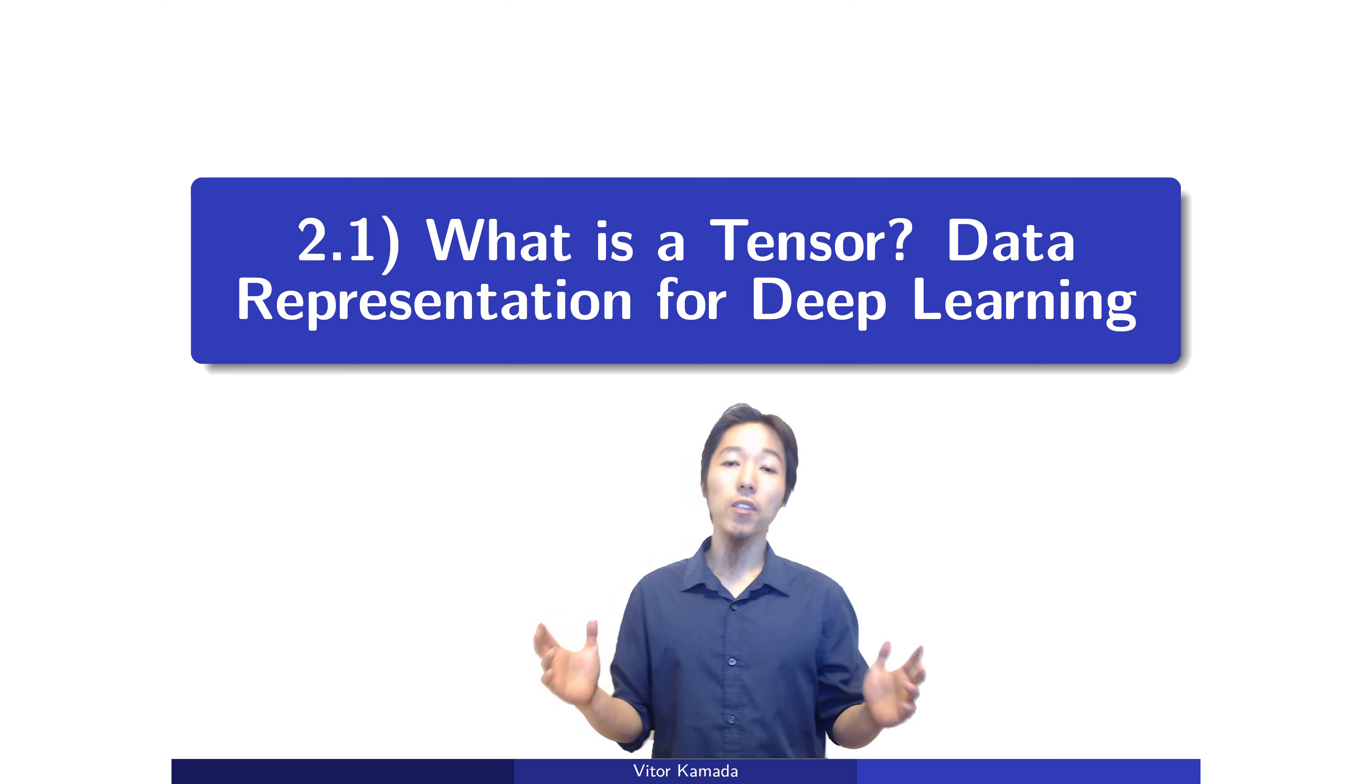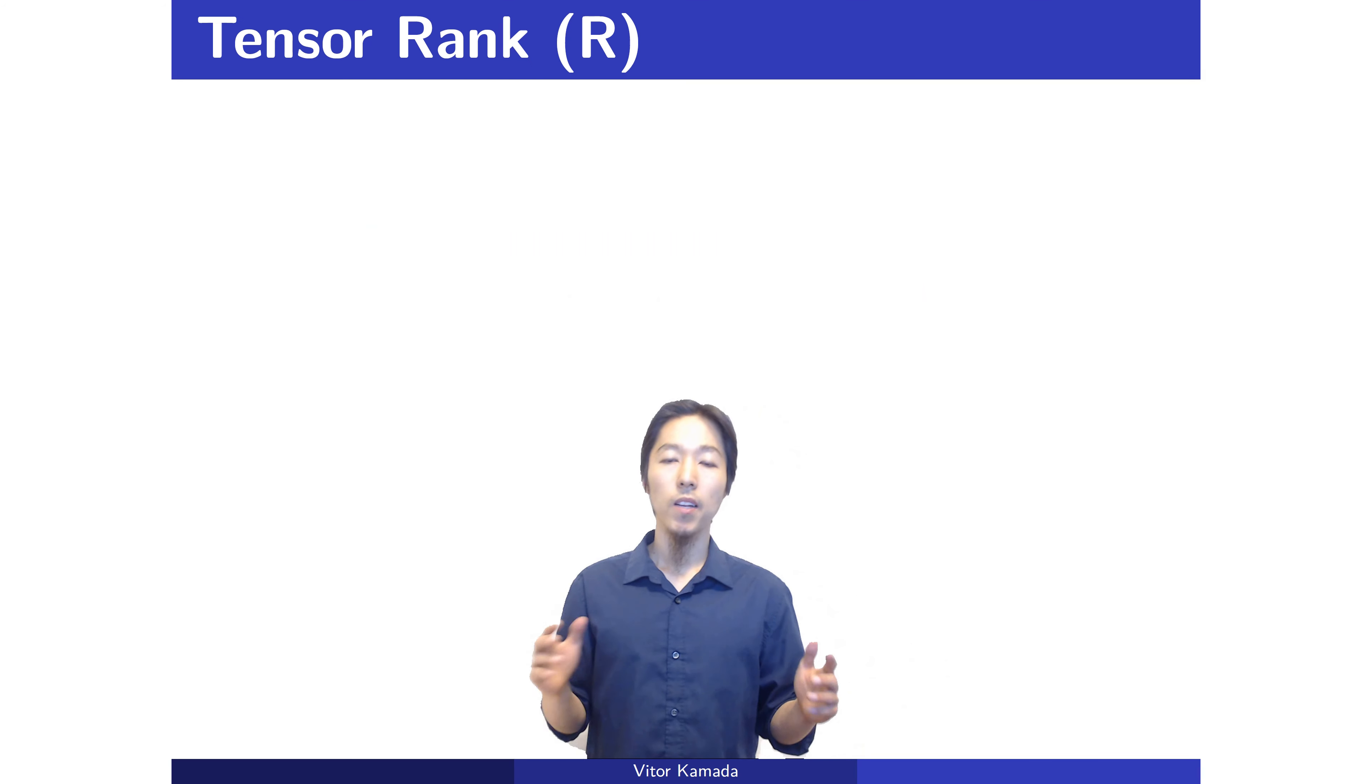What is a tensor? It's just a data representation for deep learning. A tensor is just a container for data, a generalization of the concept of scalar, vector, and matrix.